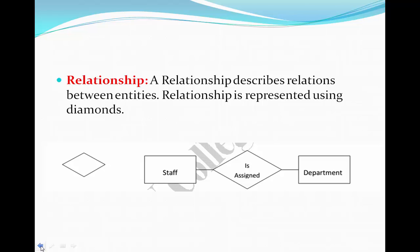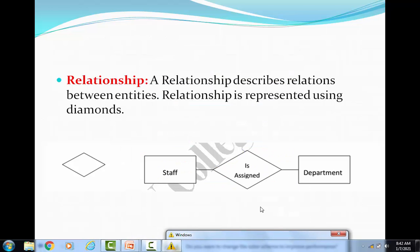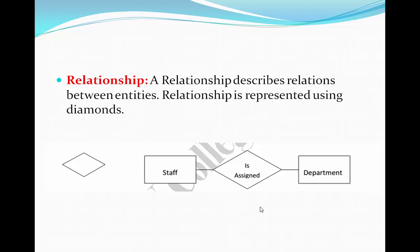We have different components used in an ER diagram. We discussed entities, weak entities, and the notation used for attributes — key attributes and composite attributes. Continuing from the previous class, we are now discussing relationships and the notation used to denote them. We use the diamond symbol to denote a relationship.